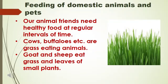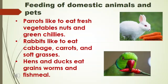Cows and buffalos are grass eating animals. They should be given fresh grass and also grams and corn for strength. Goats and sheep eat grass and leaves of small plants. Parrots like to eat fresh vegetables, fruits, nuts and grains.